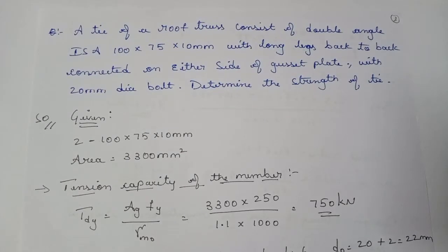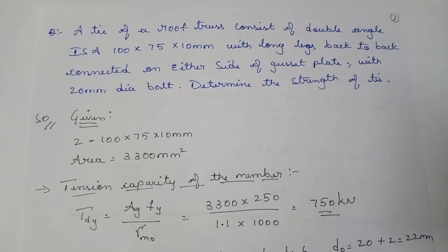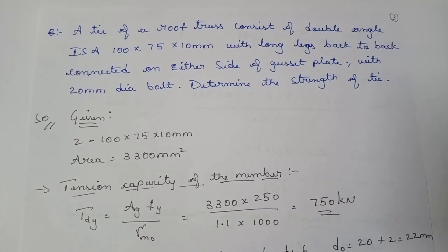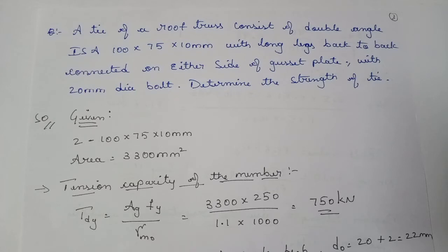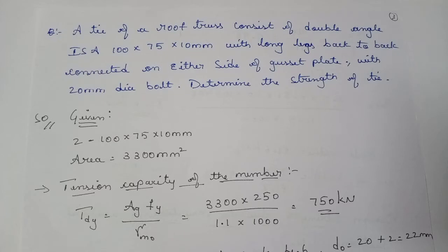In the last class we covered the design of single angle section and plates. Now we'll go for the design of double angle section. The problem: a tie of a roof truss consists of double angle ISA 100×75×10 mm with the longer leg back to back, connected on either side of a gusset plate with a 20 mm diameter bolt. Determine the strength of the tie. The area is obtained from the steel table for 2 ISA 100×75×10 mm.